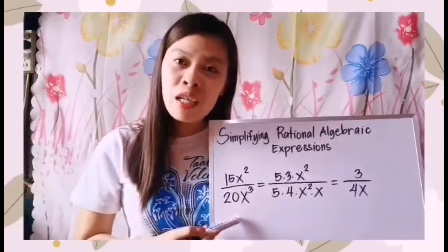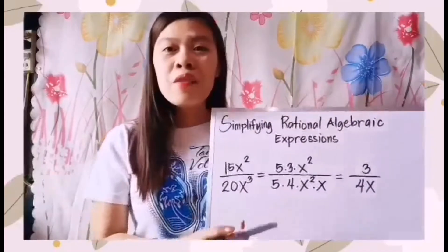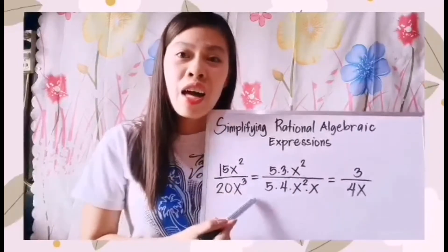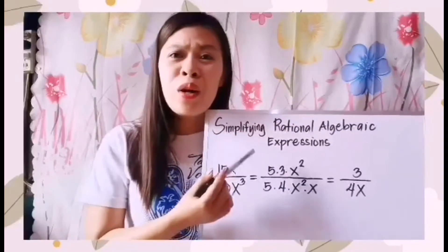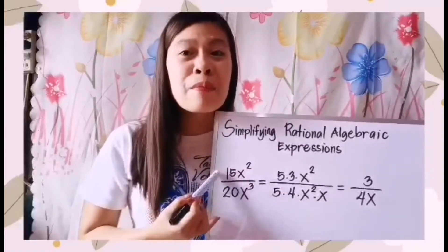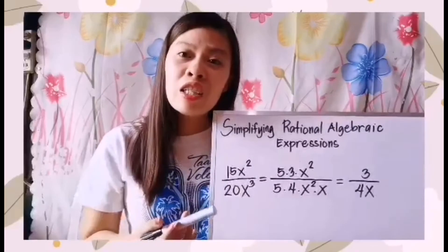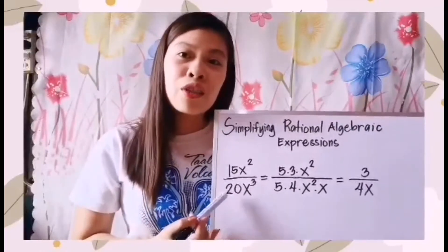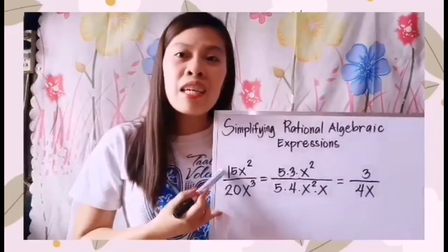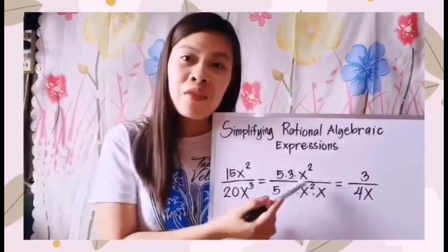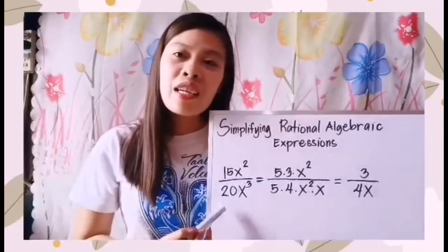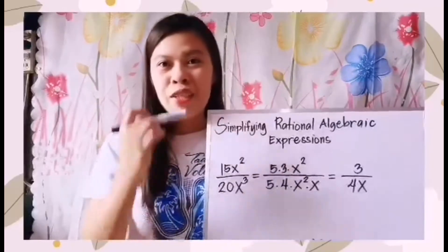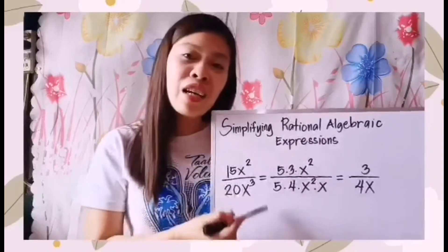We have monomial over monomial. Our solution: this is equal to 5 times 3 times x squared, all over 5 times 4 times x squared times x. We simplify the numerator 15x squared as 5 times 3 times x squared, and the denominator 20x cubed as 5 times 4 times x squared times x.